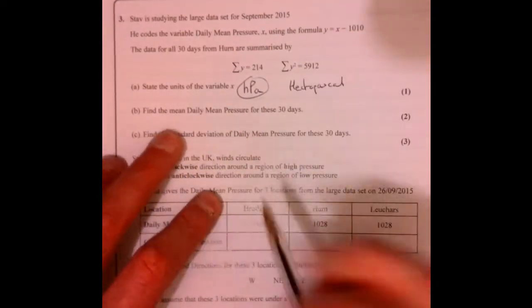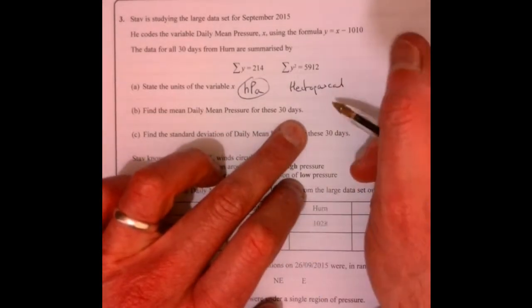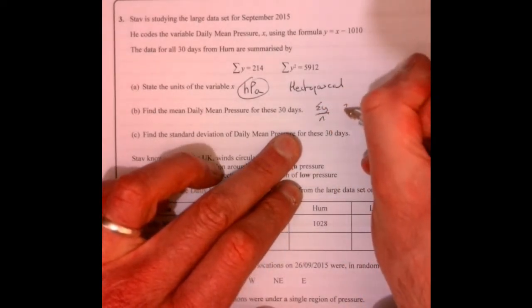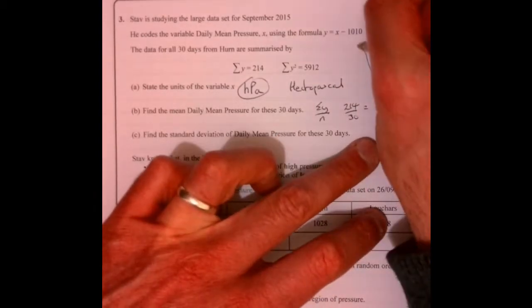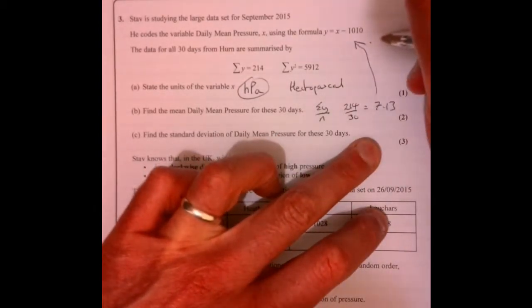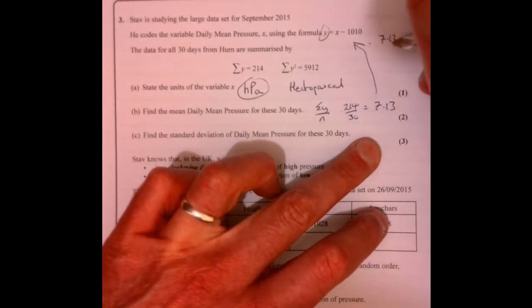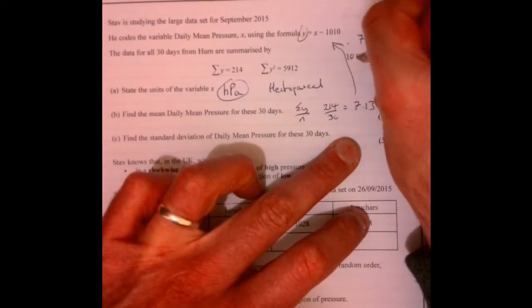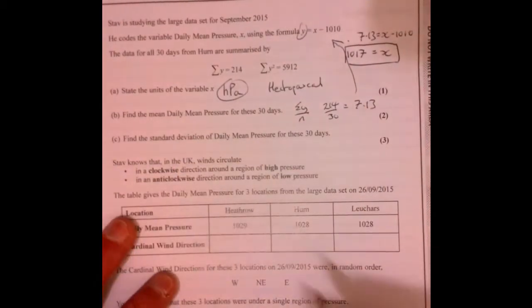So find the mean daily pressure for these 30 days. We need to work out the sum of Y over N, so that's going to be 214 over 30, which equals 7.13. But remember it's been coded, so we've just worked out that part. 7.13 equals X minus 1010, so add that to both sides and we've got 1017. So we've done the mean.